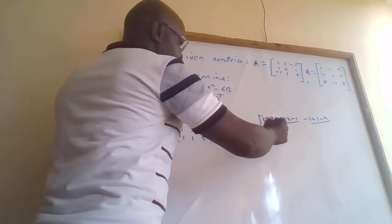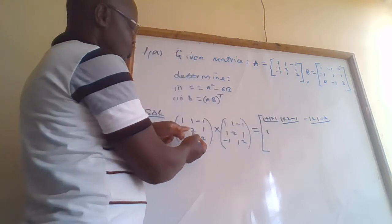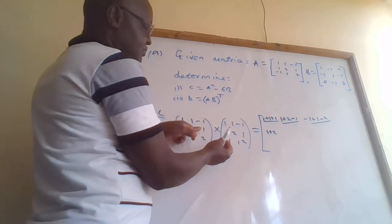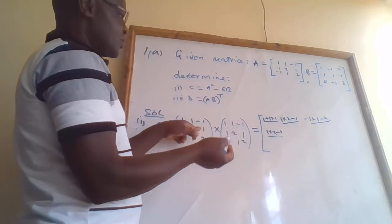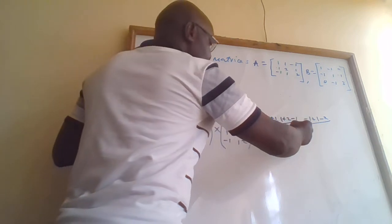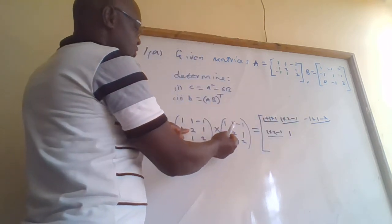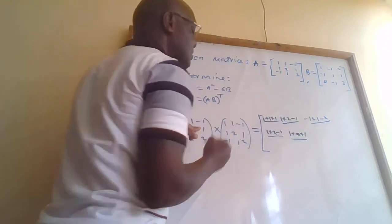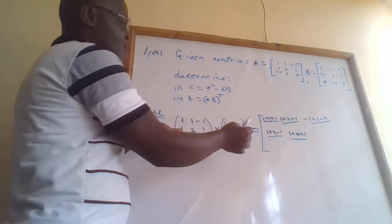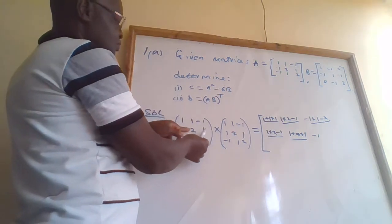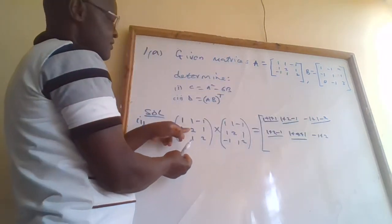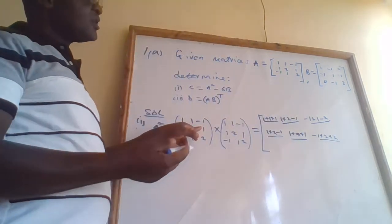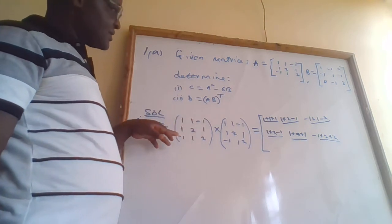Moving to the middle row: one times one, negative one times negative one, giving values for the first element. For the middle element: one times one plus two times two plus one times one gives one plus four plus one. For the third element: one times negative one plus two times one plus one times two gives negative one plus two plus two. We are through the second row.